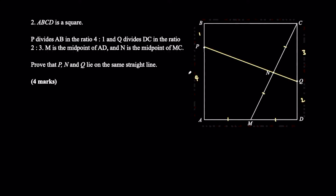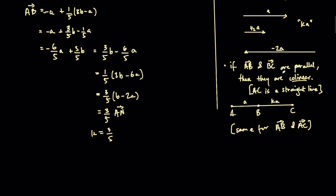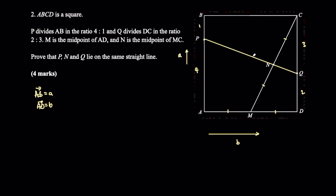This question doesn't give labels for the vectors, so we label them ourselves. Let's call AB the vector a and AD the vector b. To prove this is a straight line, we generally find two of the vectors PN, NQ, or PQ and show they are parallel — that's the collinear condition. I'm going to pick PN and NQ.